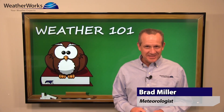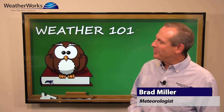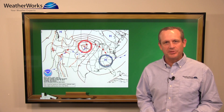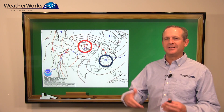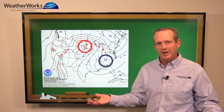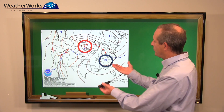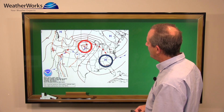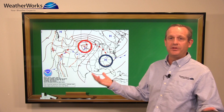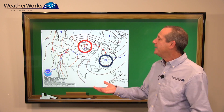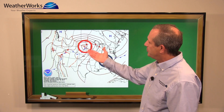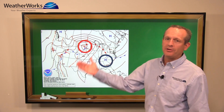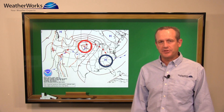Welcome back to this edition of Weather 101. And again, we're talking about high pressure versus low pressure. You've heard it on TV from the meteorologist, you see it on the weather map. High pressure is generally associated with dry weather, warm weather in the summertime. Low pressure, you get clouds, you get rain — basically bad weather with low pressure.